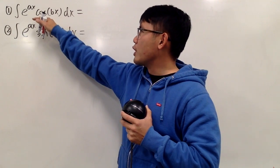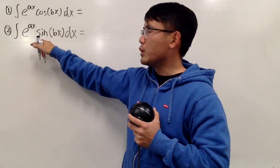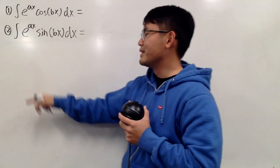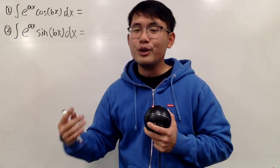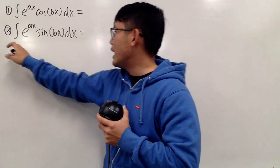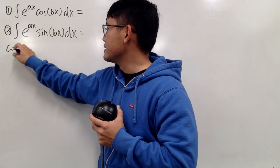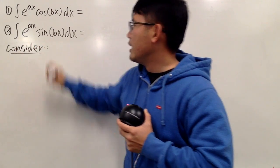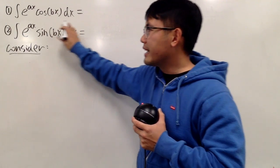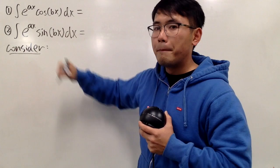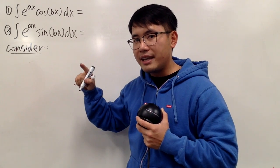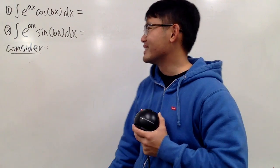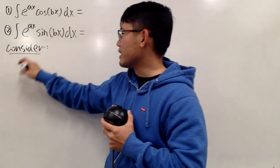We notice that we have cosine of bx here and sine of bx here. What we are going to do is invite the complex number to help us out. I'm actually going to multiply the second integral by the imaginary unit i, and then we can use Euler's formula to help us out.